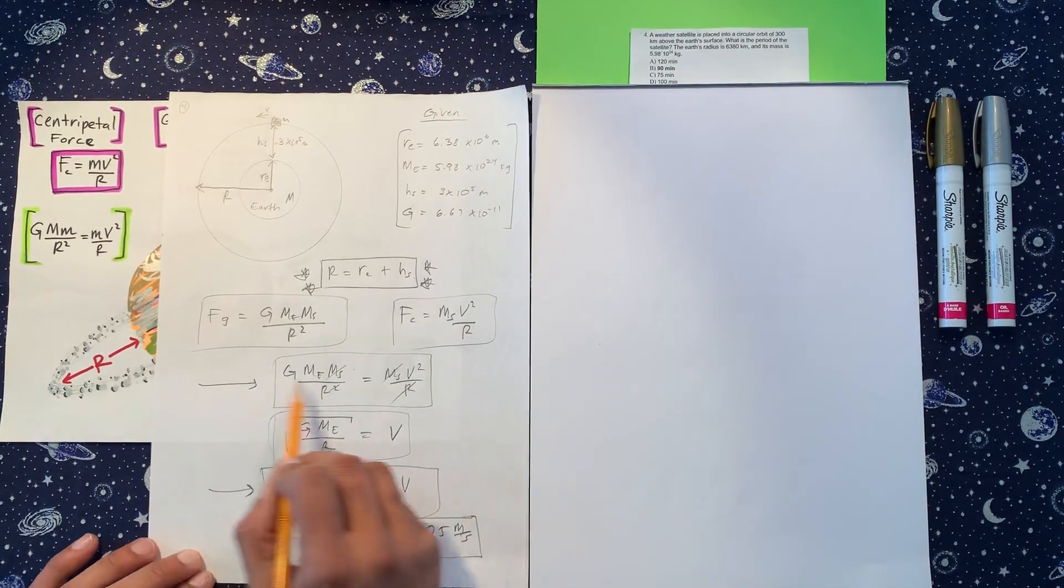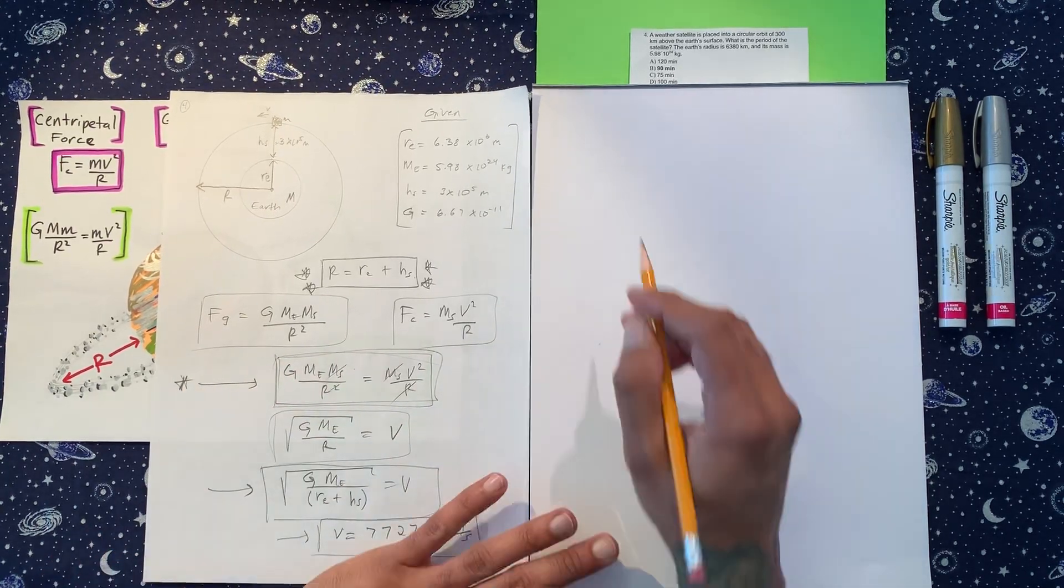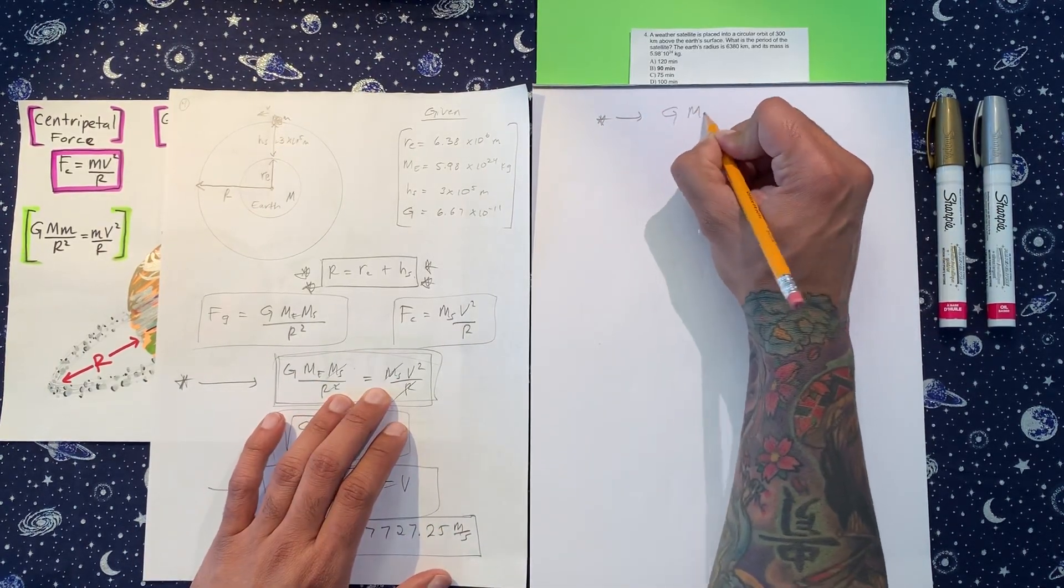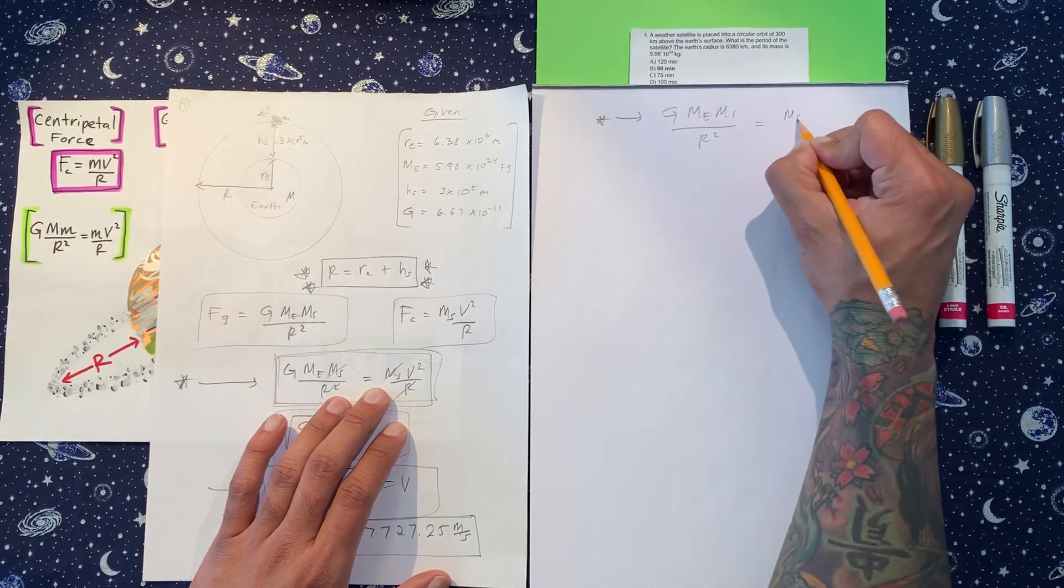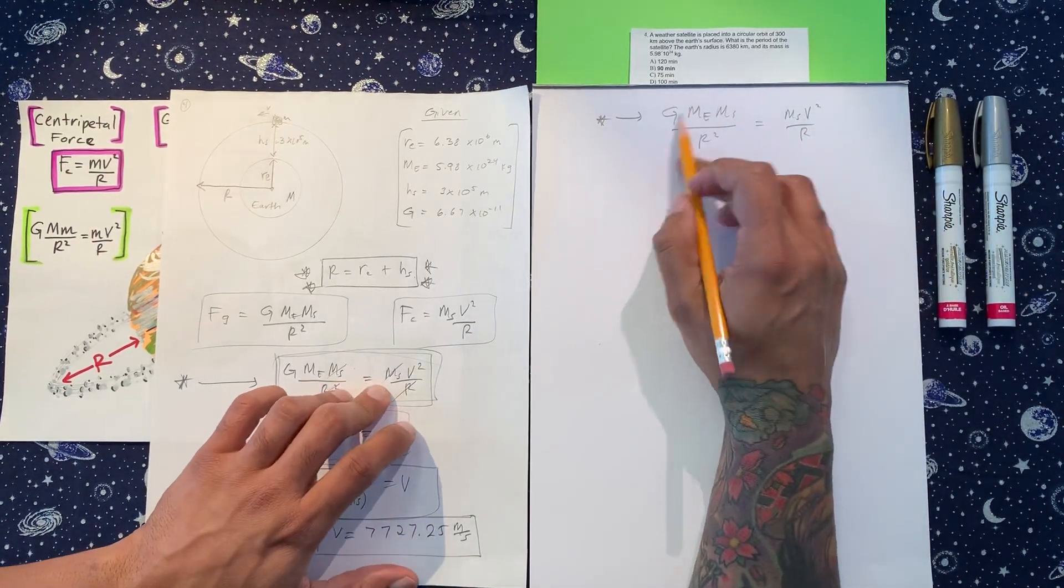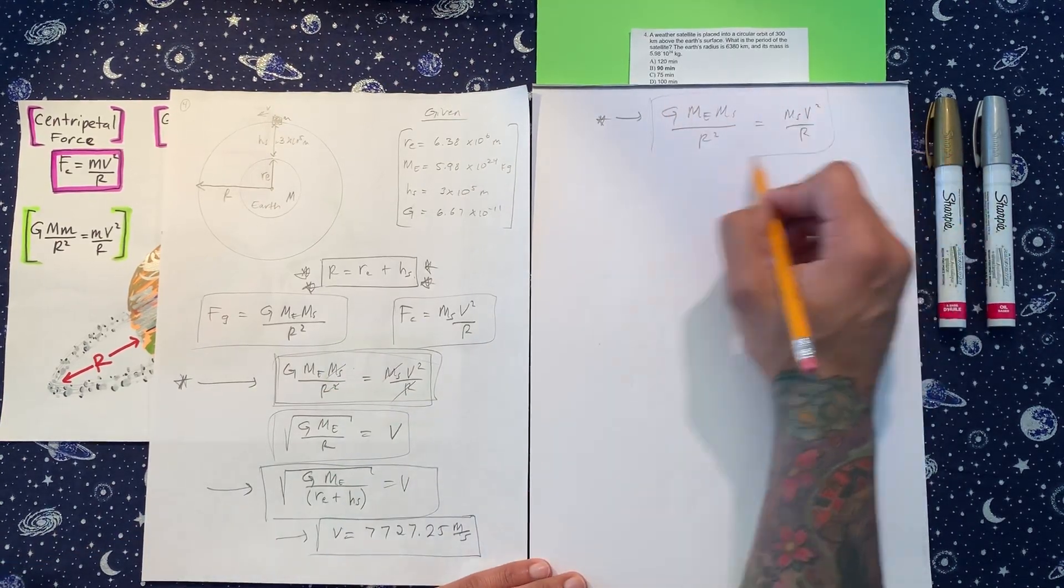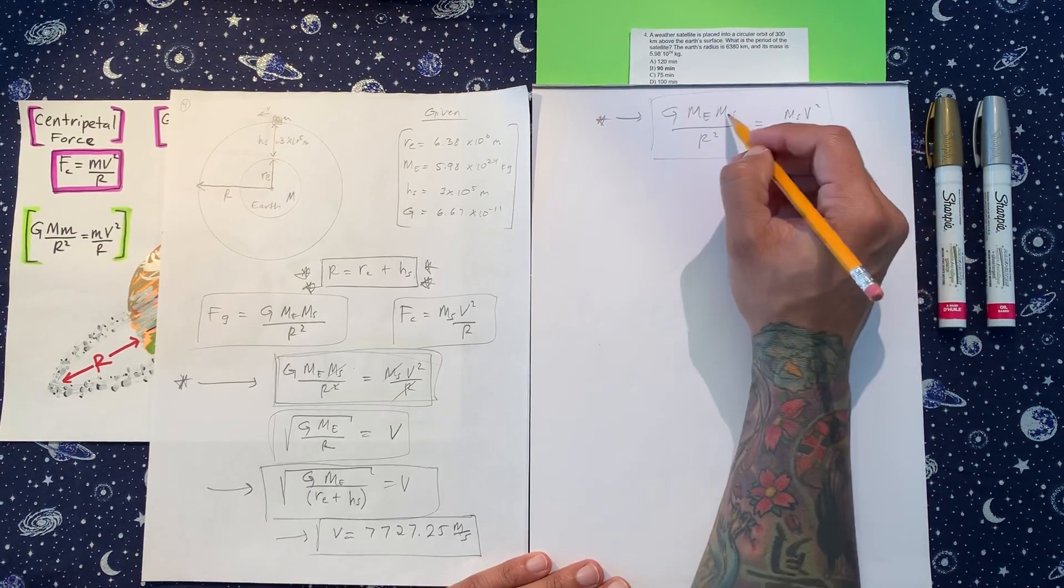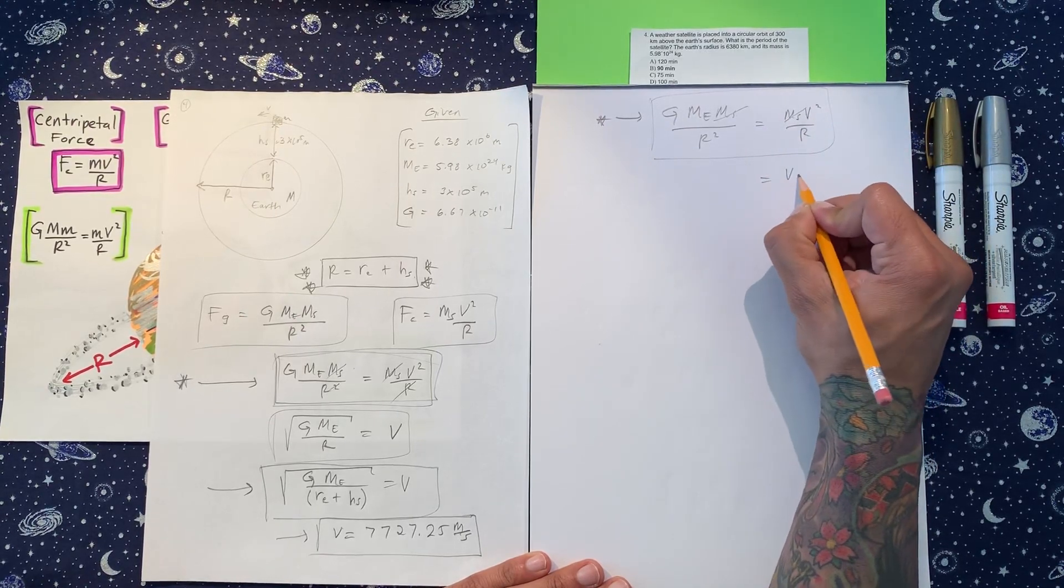So let's start with this one again. This was important. And so we're going to write that again here. We're just going to put this formula here. We got G mass of the Earth mass of the satellite over r squared is equal to mass of the satellite velocity squared over r. Okay, so gravitational force equal to centripetal force. Now I'm going to cancel out the mass of the satellites. And I'm going to rewrite this side a little bit different. This is v squared. I'm just going to put v times v.